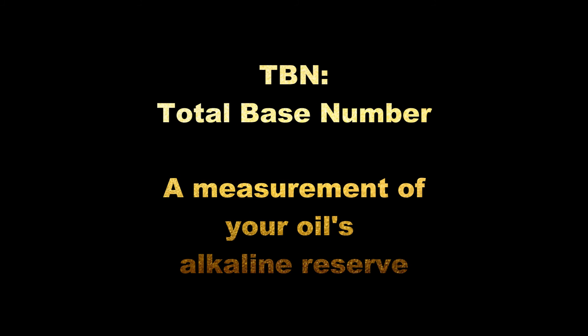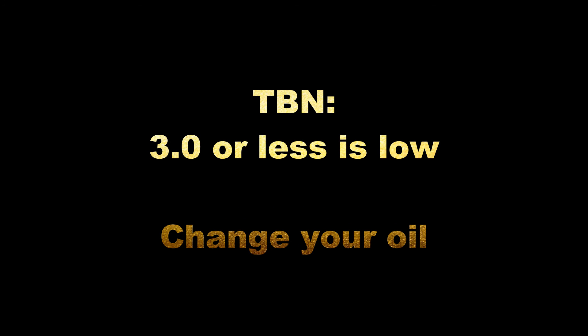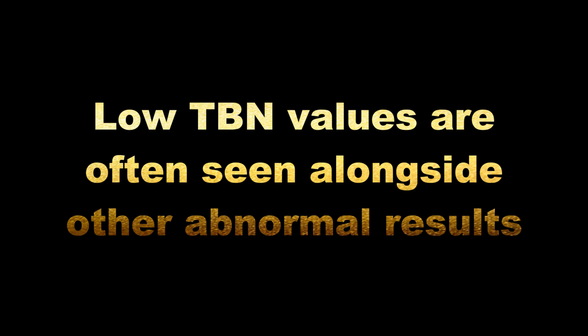Laboratories may also offer a test which measures the remaining alkaline reserve in your oil called TBN, a shortening of the phrase total base number. Each diesel engine oil originates with a different TBN value, so your oil's product specification sheet should be consulted to determine how much of the alkaline reserve in your used oil sample has depleted. In general, TBN values for any diesel engine oil that are below 3.0 are considered low, and at this point the alkaline reserve will begin to deplete rapidly. Low TBN values signal the end of the oil's useful service life, and will commonly be seen in conjunction with elevated viscosities, oxidation, and nitration products.